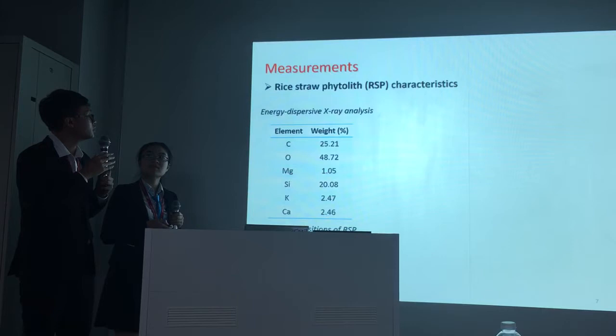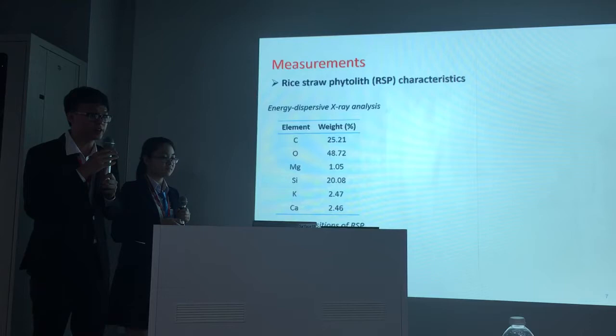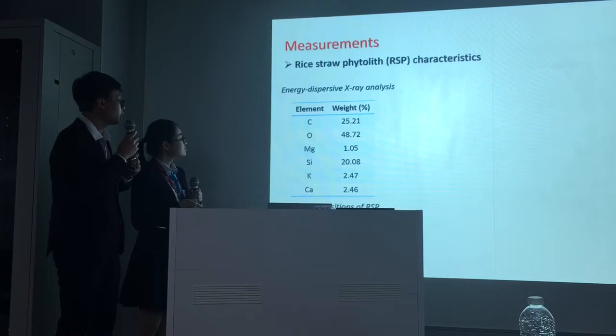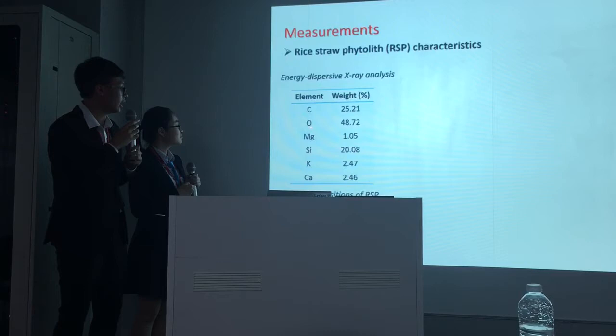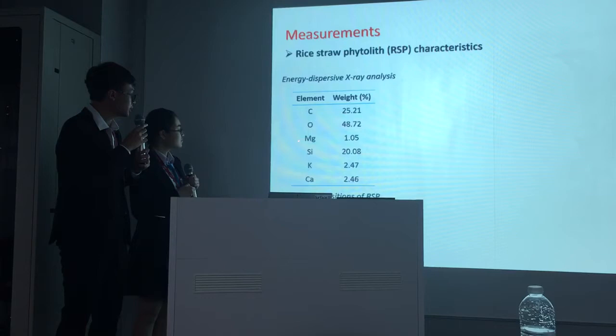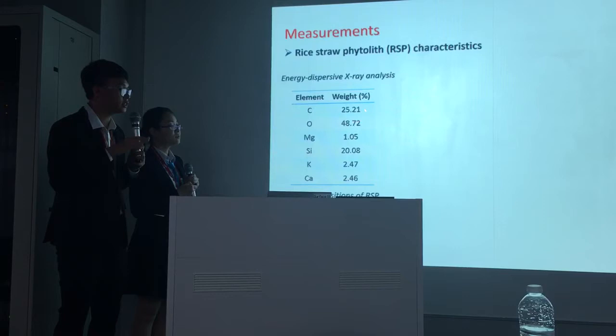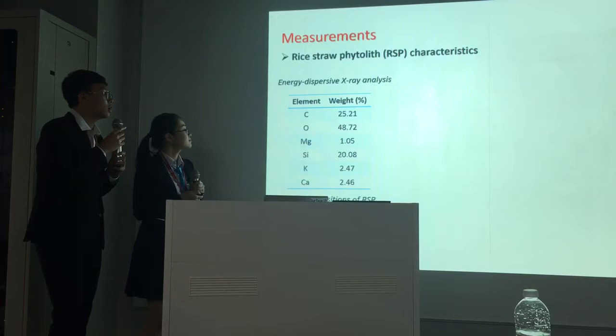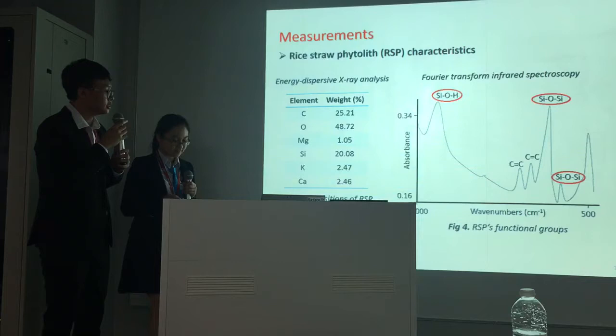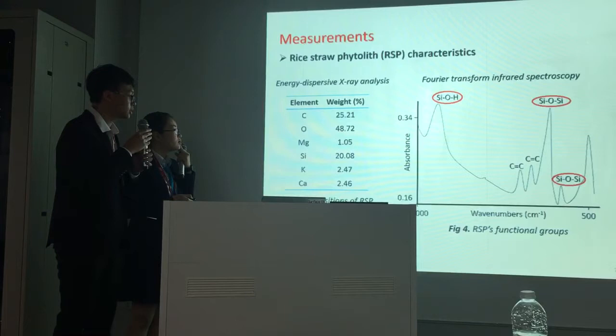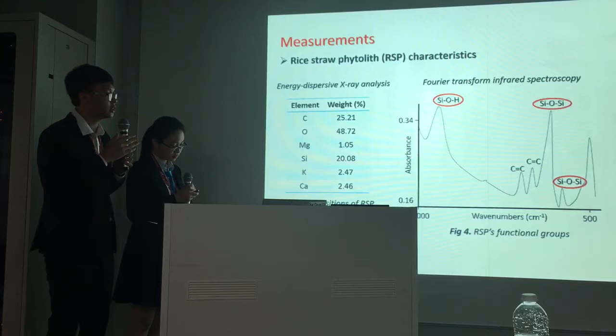This is our results in measuring the rice straw phytolith characteristics. As you can see on the EDX analysis, phytolith contains mainly oxygen and silicon. Also, there is an amount of alkaline metal, which is about 6%, and carbon also appears here, but it will not affect our process. We also did the FTIR analysis, and as you can see, silanol and siloxane are the two main functional groups of rice straw phytolith, which are very important in determining the rice straw phytolith behaviors.